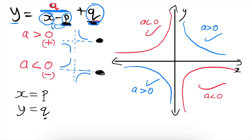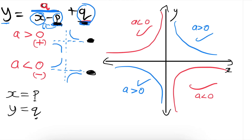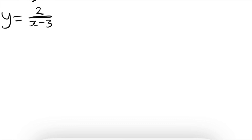When I talked about quadrants earlier, I was talking about the quadrants made by the asymptotes, not the original Cartesian plane. Let's use a real example. Let's say we have y equals 2 over x minus 3 plus 4.